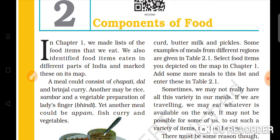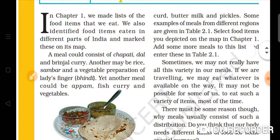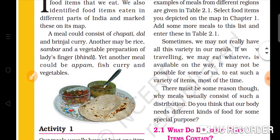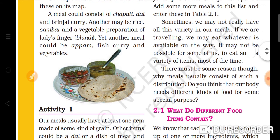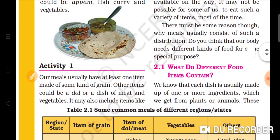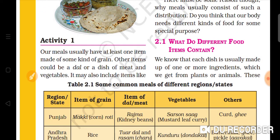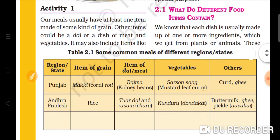You marked the names of food items from different regions. A meal may include chapati, brinjal curry, rice, sambar, and vegetables. In Punjab, for example, the meal includes makke ki roti, sarson ka saag, rajma, curd, ghee, rice, toor dal, rasam, kundru, and buttermilk.